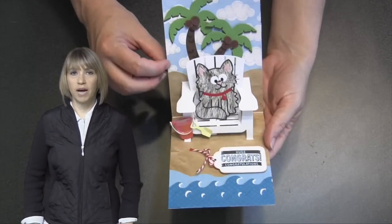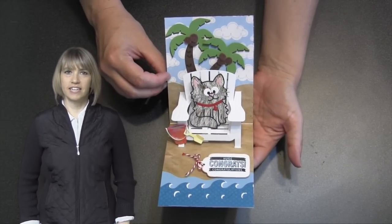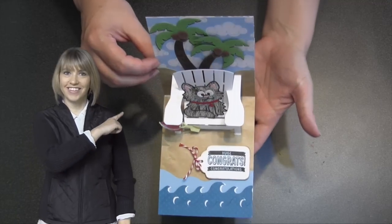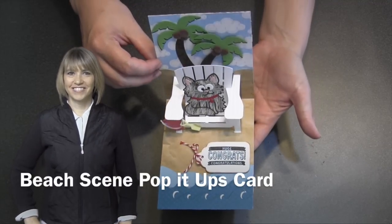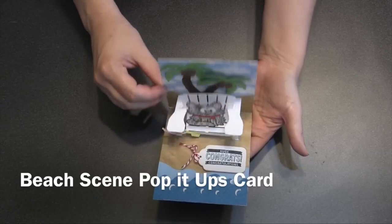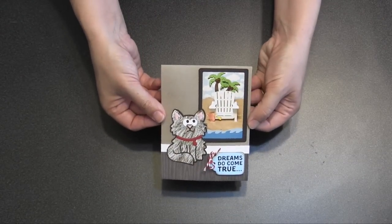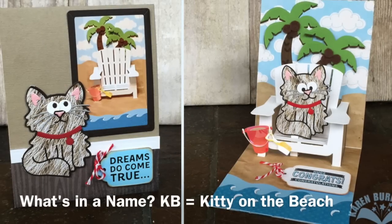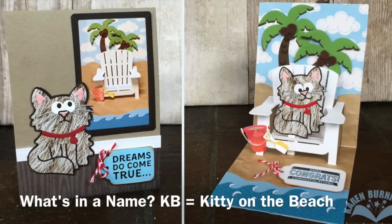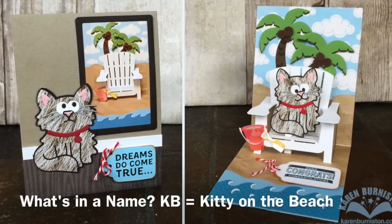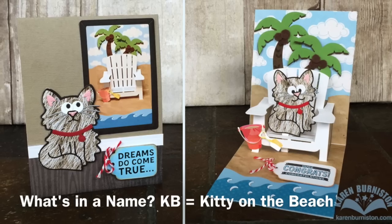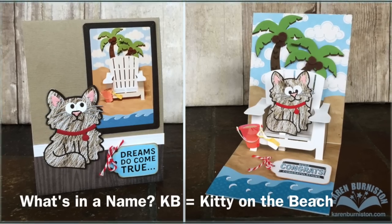Hi, I'm Karen Burniston, the designer of Pop It Ups dies for Elizabeth Craft Designs, and today I'll be teaching a tutorial on making a Beach Scene Pop It Ups card and adding a character to the Adirondack chair. This is my project for the June 2015 Designer Challenge. The theme is what's in a name, and we have to use dies based on our initials, so I have a kitty on the beach for KB.